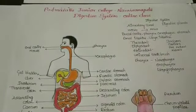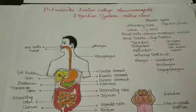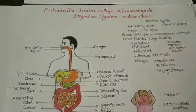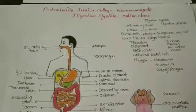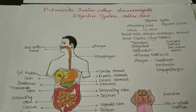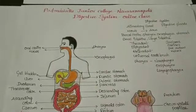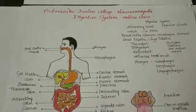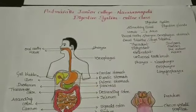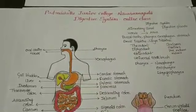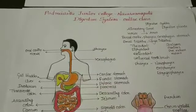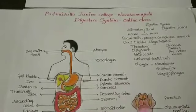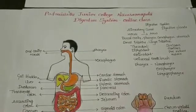The mouth is bordered by two movable lips and leads into the Buccal Cavity. The palate separates the ventral buccal cavity from the dorsal nasal chamber, and it facilitates chewing and breathing simultaneously. The Buccal Cavity consists of teeth and tongue.